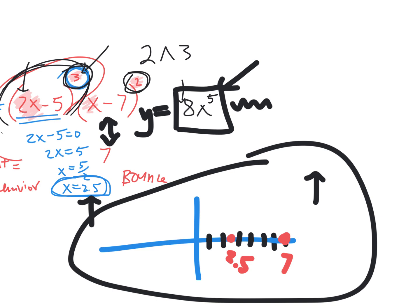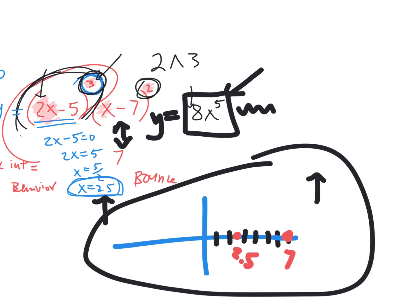I'm going to walk around and see if you have it bouncing in the right spot and what the ends are doing. Since this is positive, it's going up on the right. Victoria — up or down on the left? Down, because x is odd — it has to go the opposite direction. Where is it bouncing? Liliana — 7. Yes, because of the squared here, 7 is a bounce. There's only one thing left: if this bounces and the other one passes through, it must go like that.